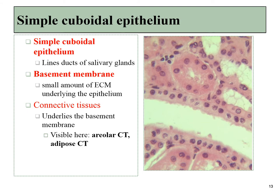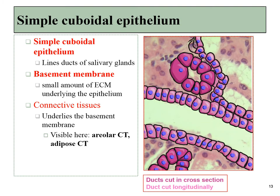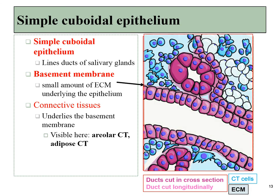A simple cuboidal epithelium involves a single layer of cells that are roughly as wide as they are tall. They often form ducts, and we will see some of these in the salivary glands. Underneath every single layer of cuboidal epithelial cells will be some connective tissue. I'll highlight the simple cuboidal epithelia here in pink. You'll notice there are multiple layers that get close to each other, but just because we've got two simple epithelia close to each other does not make them stratified. Underneath are connective tissue cells, including a bunch of extracellular matrix.